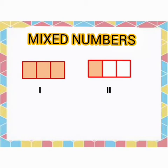There are two identical rectangles with equal number of parts. 1st Rectangle is completely shaded. Here, 3 out of 3 parts are shaded. So, for 1st Rectangle, we can write 3 upon 3.